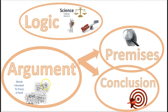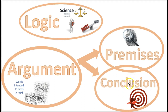Words that are intended to prove a point. And a premise — what's a premise? A premise is content in the argument; it's basically the evidence that leads to the point that they're trying to prove, which would be the conclusion. The conclusion is the point that the person is trying to prove.